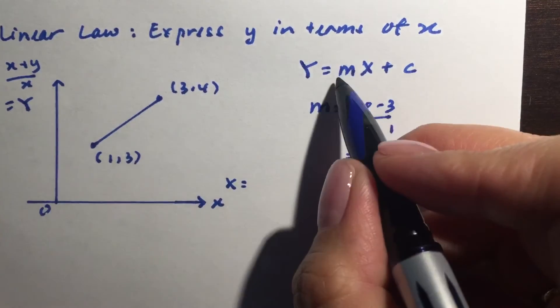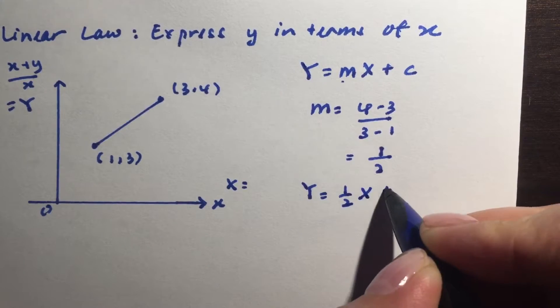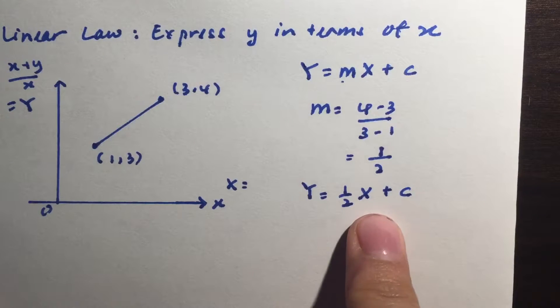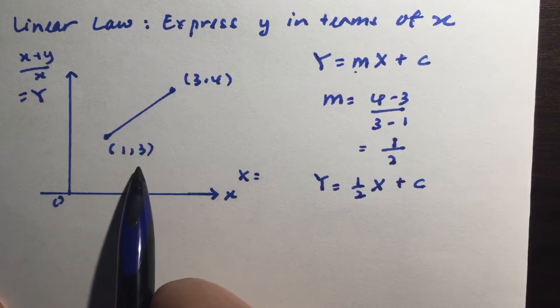So this is my gradient. Putting it back here I have big Y equals half big X plus c. Don't be hasty about replacing the y and x, leave it, just find the c value first.